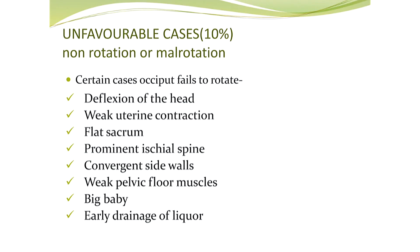In cases of occipital posterior, around 10% of cases we can expect unfavorable conditions such as non-rotation or mal-rotation. The main causes of these are: deflection of the head, weak uterine contractions, flat sacrum, prominent ischial spine, convergent side walls, weak pelvic floor muscles, big baby, and early drainage of liquor.